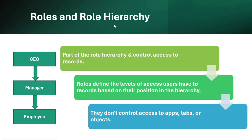When OWD is private and we want to access another owner's records, roles come into the picture. In the role hierarchy: CEO can access manager and employee records, manager can access employee records, and employees can only access records they own. Roles define the level of access users have to records based on their position in the hierarchy. Roles do not control access to apps, tabs, objects, or fields — those are managed through profiles.